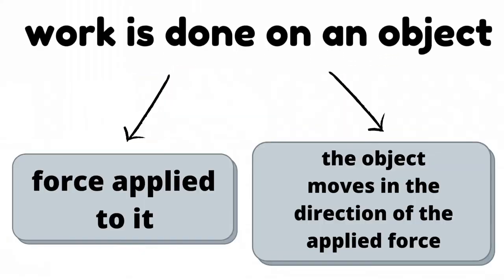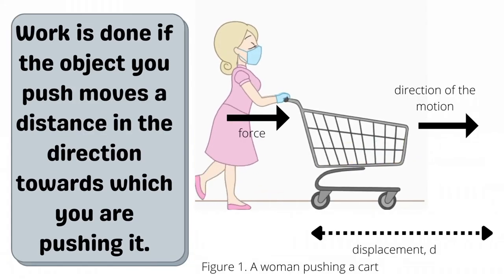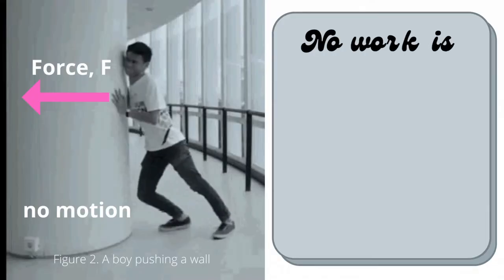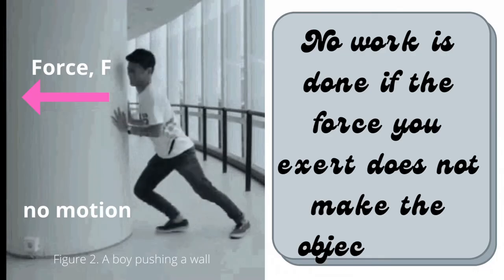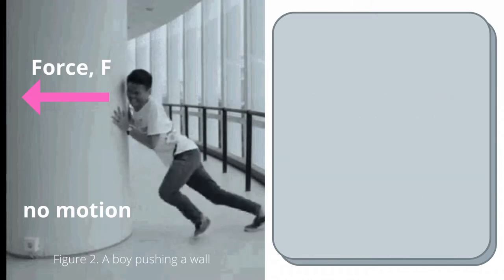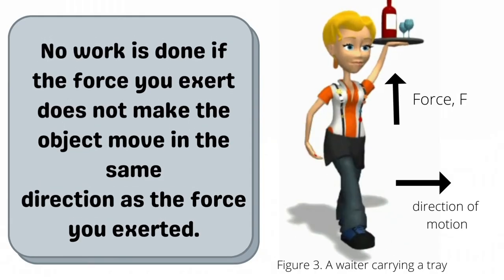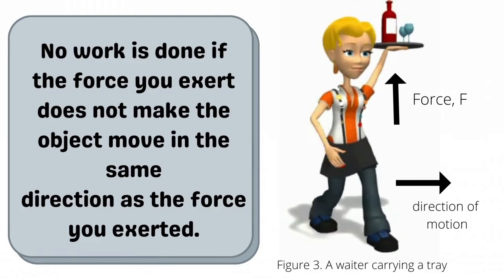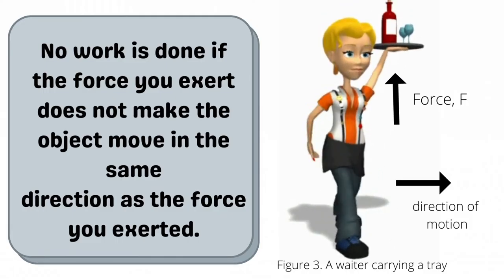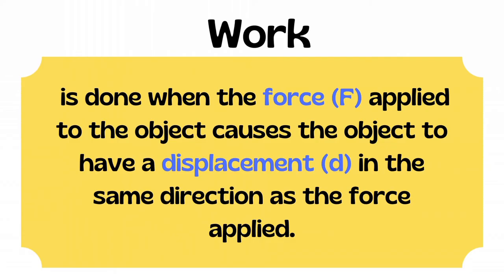In order to say that work is done on an object, there must be force applied to it and the object moves in the direction of the applied force. Work is done if the object you push moves a distance in the direction towards which you are pushing it. No work is done if the force you exert does not make the object move. No work is done if the force you exert does not make the object move in the same direction as the force you exerted. Work is done when the force applied to the object causes the object to have a displacement in the same direction as the force applied.